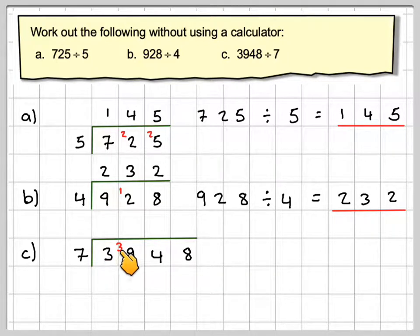Now 7 goes into 39, 5 times. And there's going to be 4 left over. So you do need to know your times tables here. 7 into 44 goes 6 times.